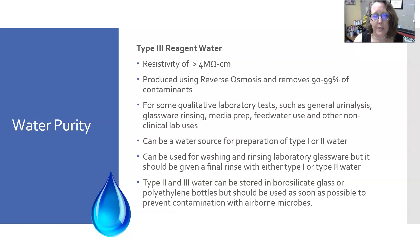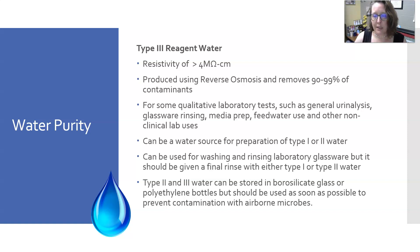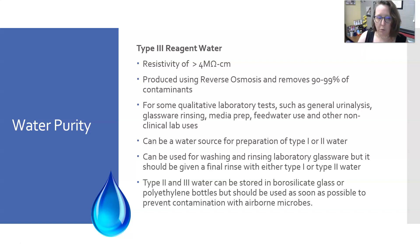Type 3 reagent water has a resistivity of greater than 4 mega-ohms per centimeter. It is produced using reverse osmosis, which removes 90% to 99% of contaminants. It is used for some qualitative lab tests such as general analysis, glassware rinsing, media prep, and feed water use — meaning it can serve as a water source for the preparation of Type 1 or Type 2 water. It can be used for washing and rinsing lab glassware, but should receive a final rinse with Type 1, Type 2, or clinical lab reagent water. Type 2 and Type 3 water can be stored in borosilicate glass or polyethylene bottles, but should be used as soon as possible to prevent contamination with airborne microbes.